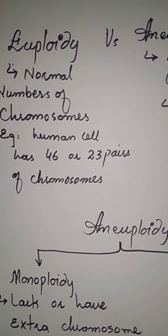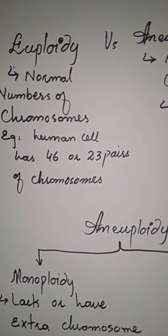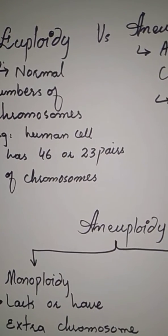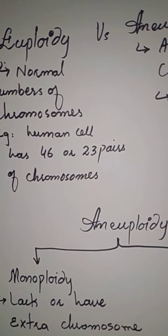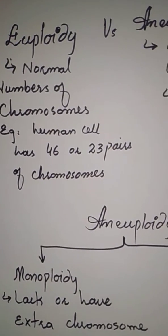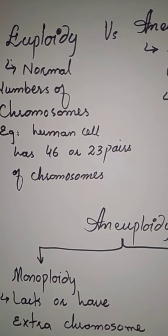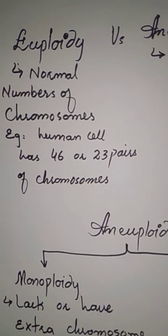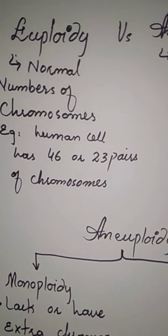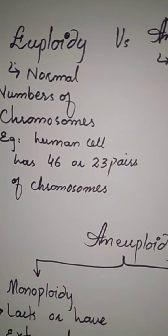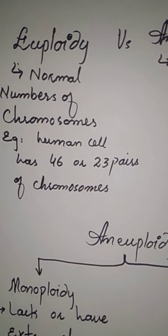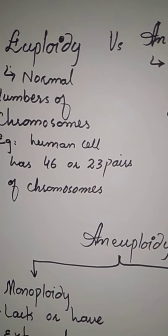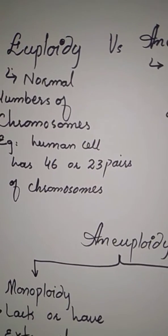The word 'eu' means normal — a true explanation of something. Euploidy means a normal number of chromosomes, meaning the chromosome number within the cell is according to the species. In human cells there are 46 chromosomes, or 23 pairs.